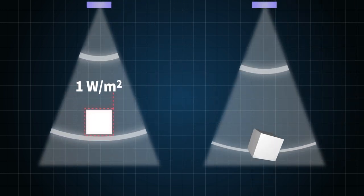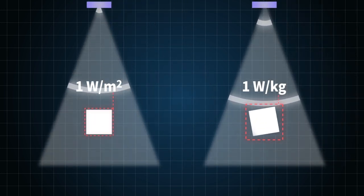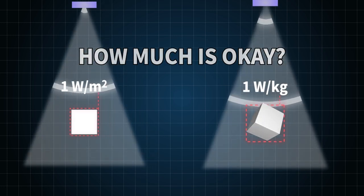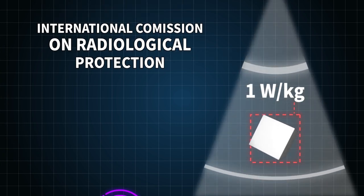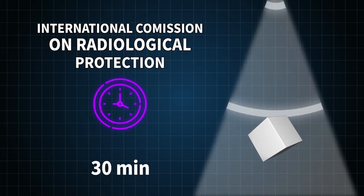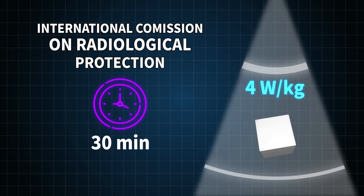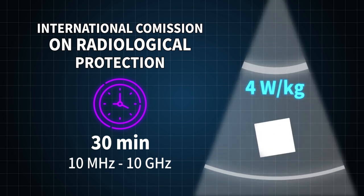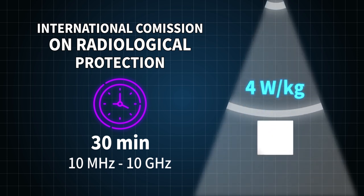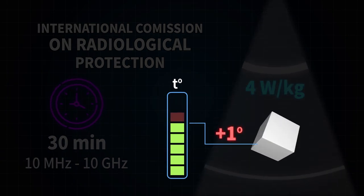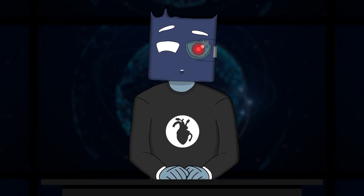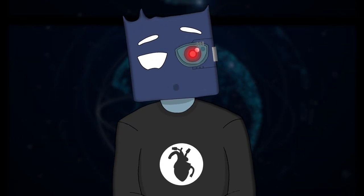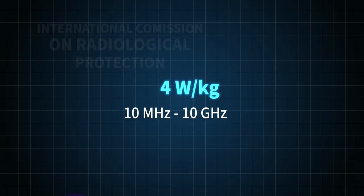The International Commission on Radiation Protection says that if the whole body is irradiated for 30 minutes with an energy flux density of four watts per kilogram in the frequency range from 10 megahertz to 10 gigahertz, which is exactly the case of cell towers, then the body temperature will increase by one degree. By the way, you can already figure out that the less you like fitness, the safer the radiation is for you.